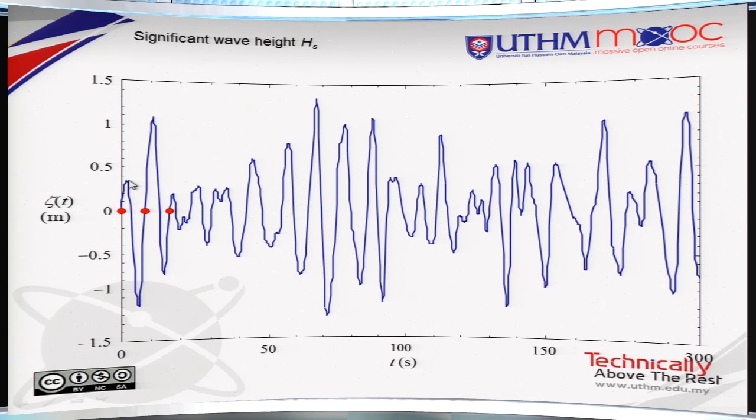Wave height is actually measured vertically from wave crest to wave trough. In this example here, we have 22 complete waves. So, there are going to be 22 wave heights.